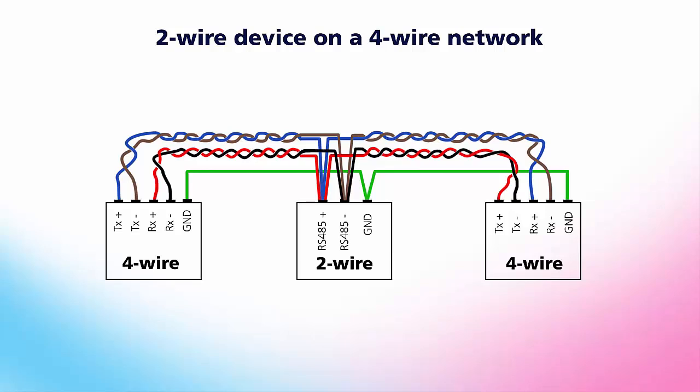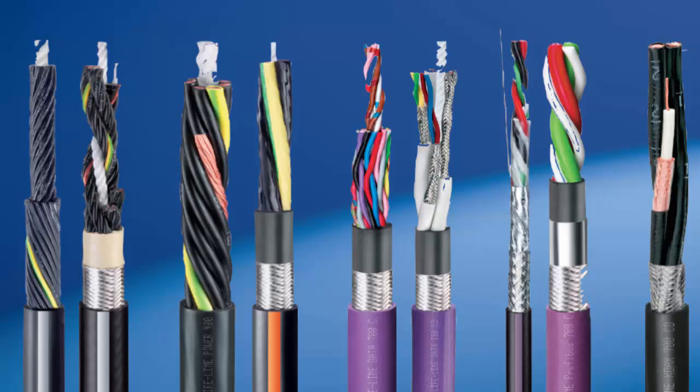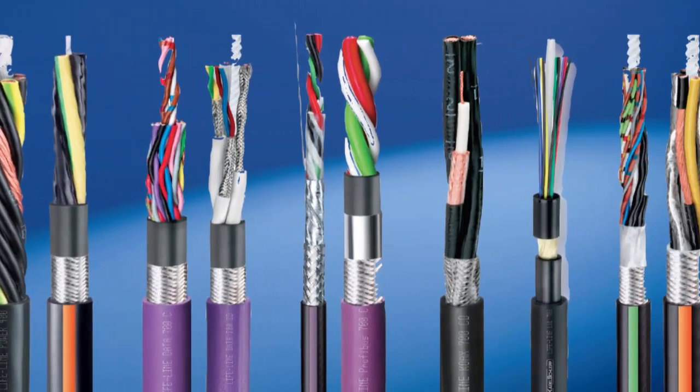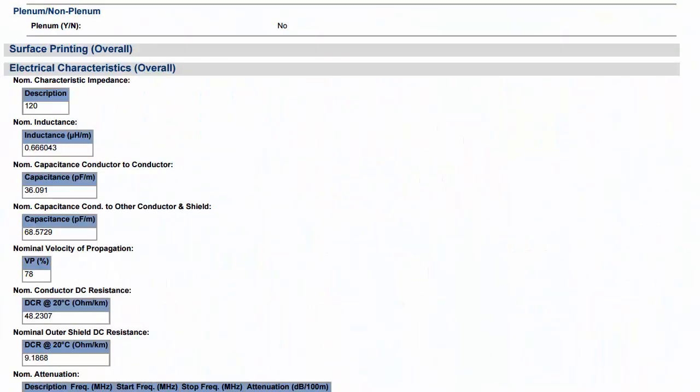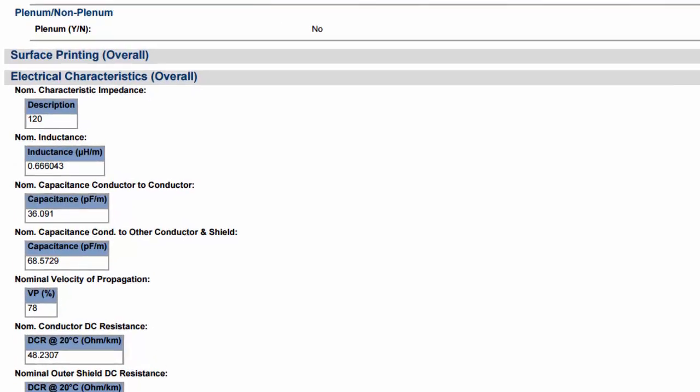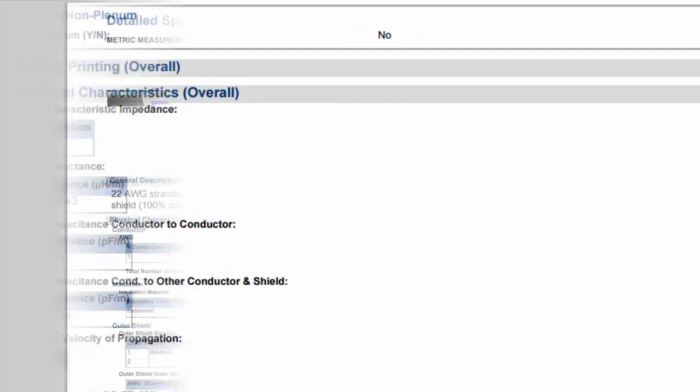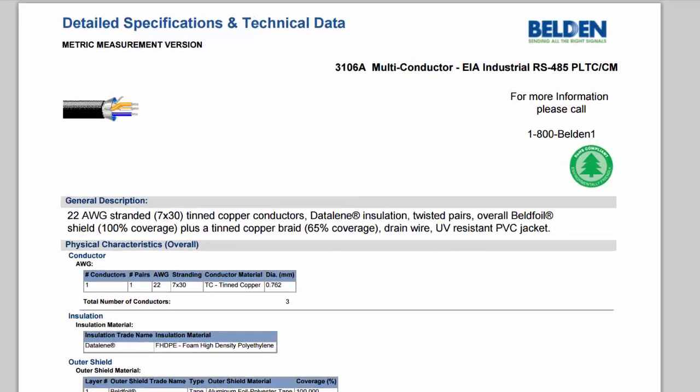All types of industrial cables are not created equal. Be sure to use the correct cable for optimal RS-485 performance. This is a 120 ohm nominal impedance cable, such as the Belden 3106A industrial cable.